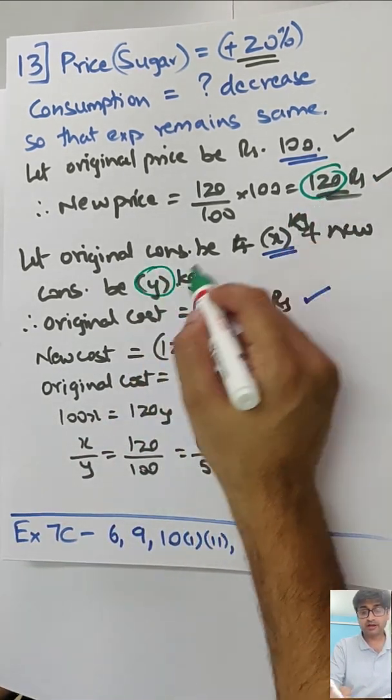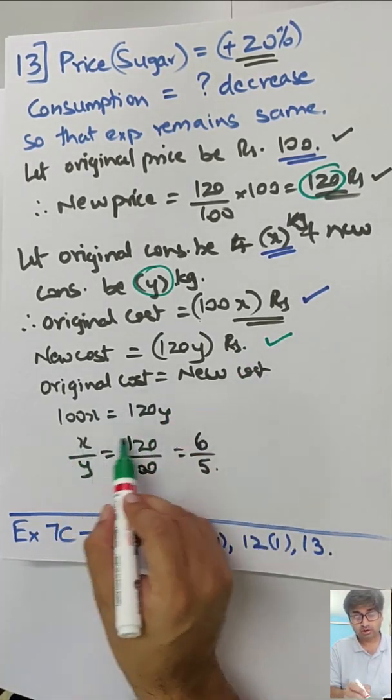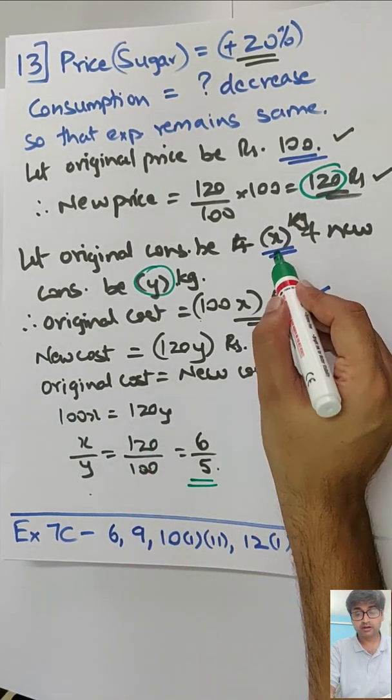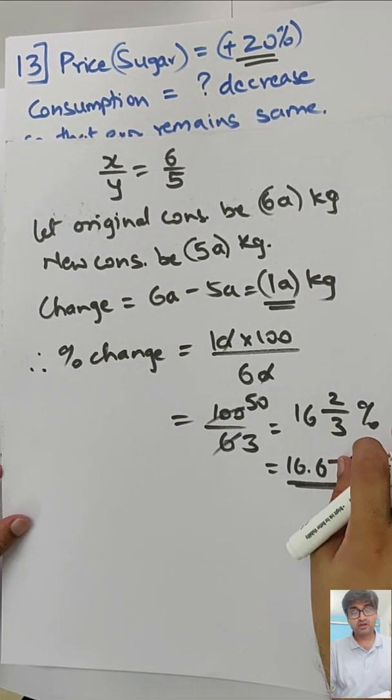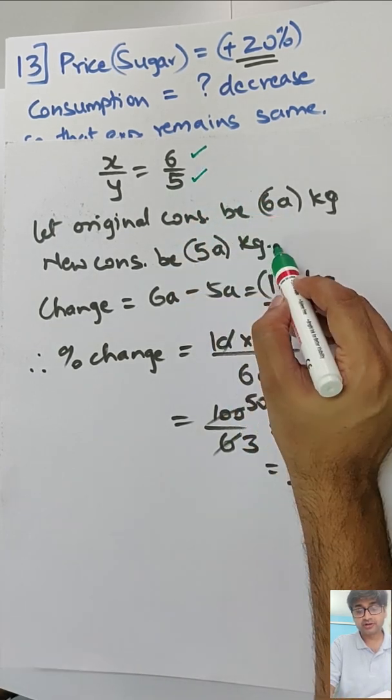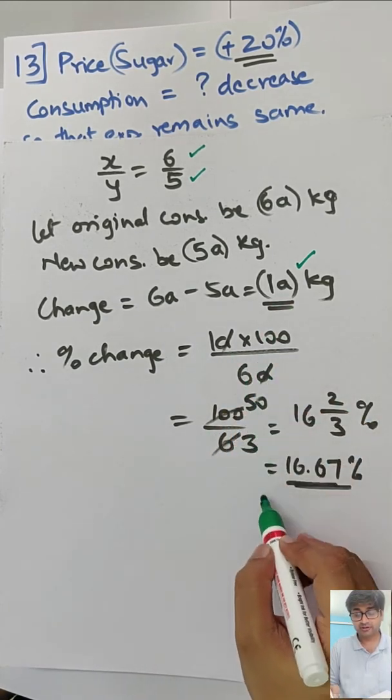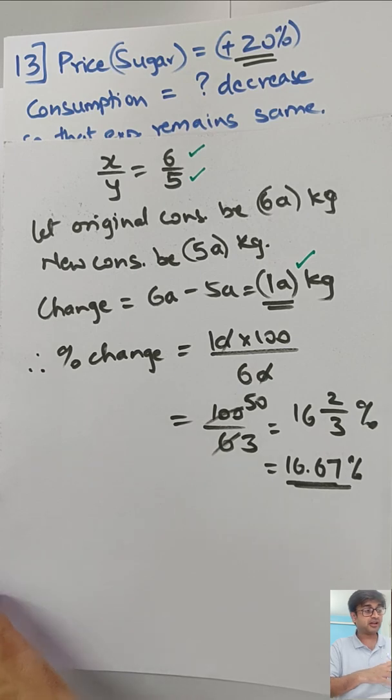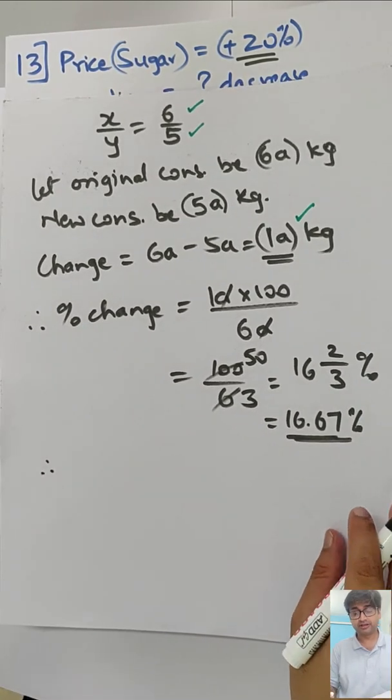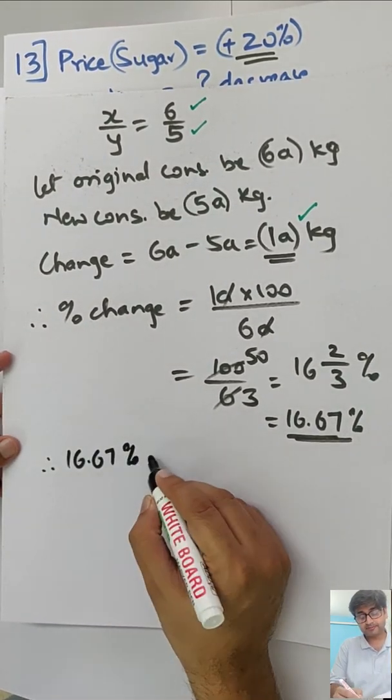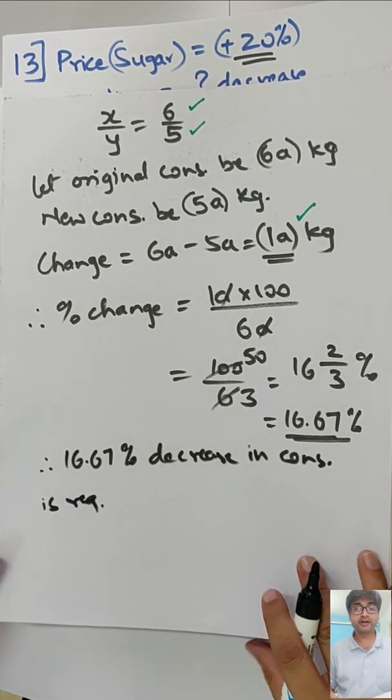Now using these two bases let's find out the change in consumption. Change will be 6A to 5A, so 1A kg has been changed. Therefore percent change is change into 100 upon original quantity that is 6A. A gets cancelled, 100 by 6, so 16.67% or 16 and 2/3 percent. Therefore consumption should decrease by 16.67% to keep expenditure the same.